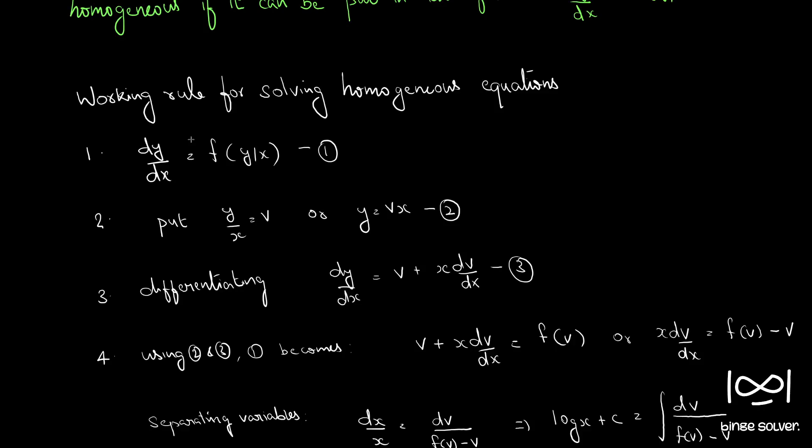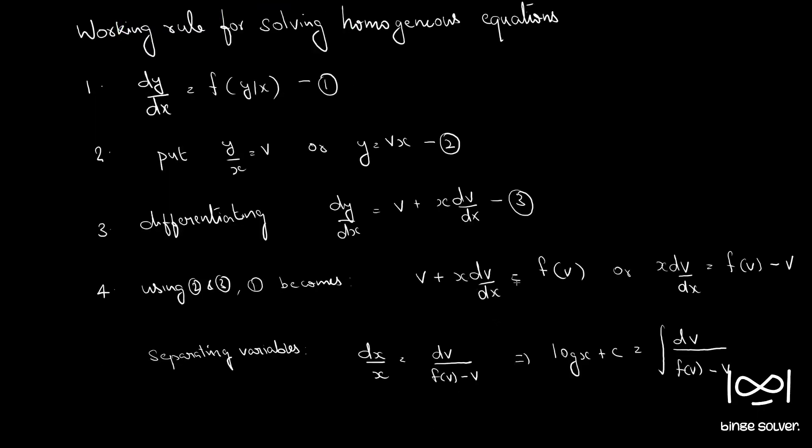Once we get the form v + x·dv/dx = f(v), this equation can be solved using the method of separation of variables. v and x are the variables — we will separate them, bring all v terms to one side and x to the other, and then integrate to find the solution. These are the working rules for solving homogeneous equations, and we will use these steps to solve the coming problems.